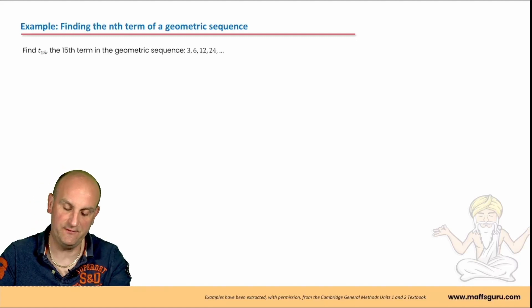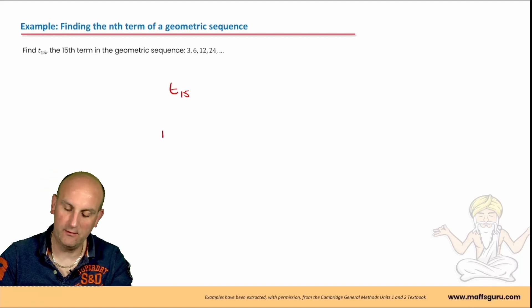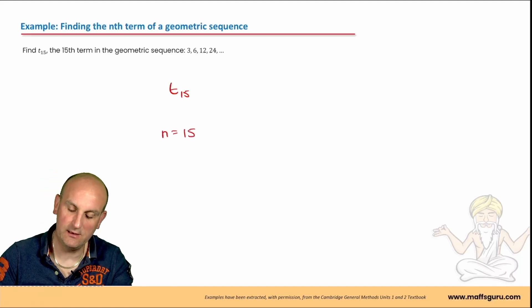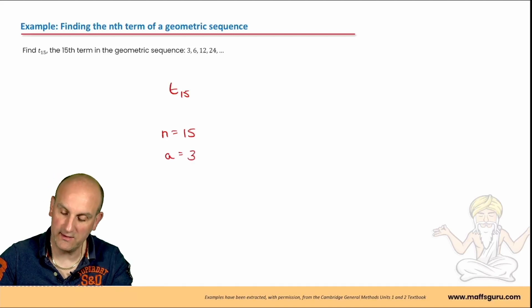Find t15. So we're going to find t15. The minute I've written that down, I now know that my value of n is going to be 15. In the geometric sequence 3, 6, 12, 24, I now know my a is 3. And I'm going to write over here.